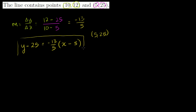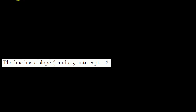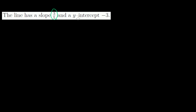If you want, you can do the algebra to convert this to slope-intercept form — the mx plus b form — and see that they are completely equivalent. Let's do another one. They gave us a slope of 3 fifths and a y-intercept of negative 3. This would be very easy in slope-intercept form: y equals 3 fifths x minus 3.